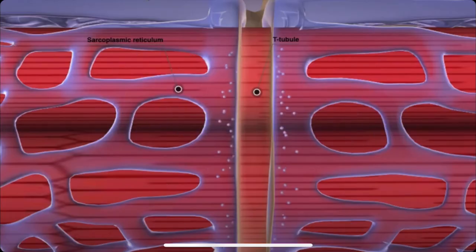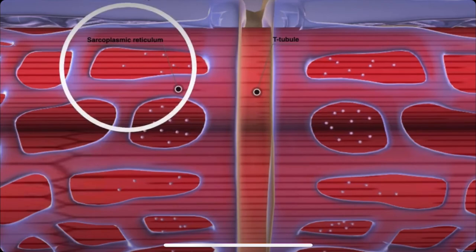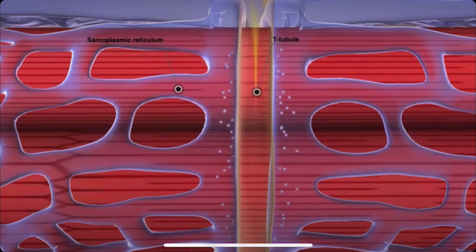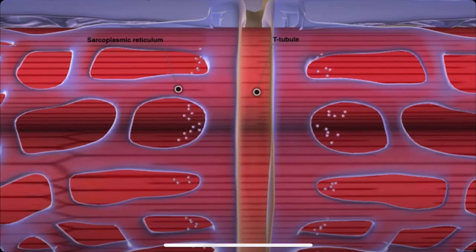As the action potential travels down the T-tubule, calcium is released from the sarcoplasmic reticulum, whose main function is to store calcium ions.